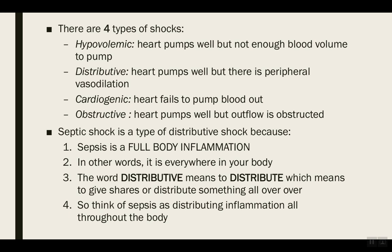Then you have distributive shock, which is when your heart pumps well but there's peripheral vasodilation, which causes vital organs to not get enough blood — also leading to decreased blood flow and hypotension. Then we have cardiogenic shock, where your heart fails to pump the blood out, leading to the same outcome. And then we have obstructive shock, where the heart is pumping well and there may be enough blood, but there's some kind of outflow blockage in the peripheral.